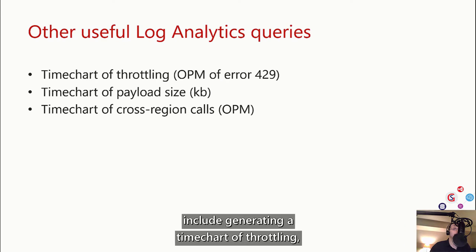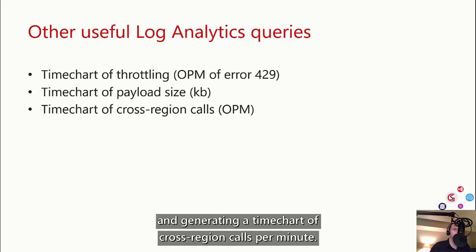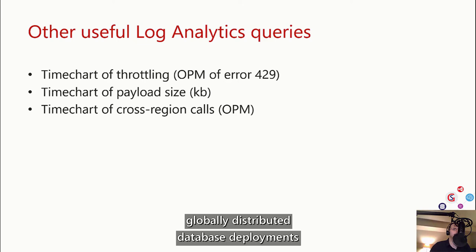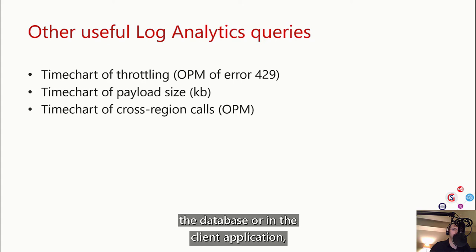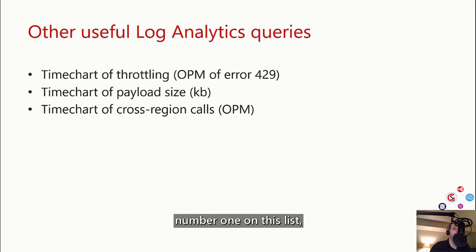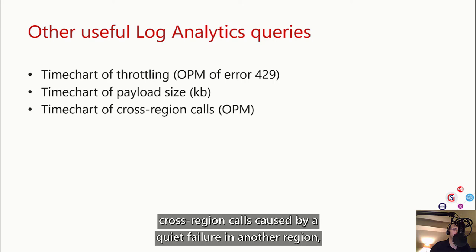Some other really useful queries include generating a time chart of throttling — i.e. 429 errors per minute — generating a time chart of percentile payload size per minute, and generating a time chart of cross-region calls per minute. Cross-region calls especially are a common issue in globally distributed database deployments, where one region fails in the database or client application in a quiet way, causing the client application to failover and send requests to another region, so that second region starts to throttle from overload. You might see the throttling and use the 429 time chart query and think you have a throttling problem. But when you run the cross-region calls query — querying on calls where the source and destination region don't match — you realize the actual problem is cross-region calls caused by a quiet failure in another region. This really illustrates the value of Log Analytics for live site monitoring and debugging.